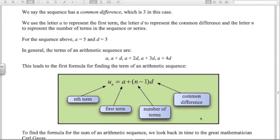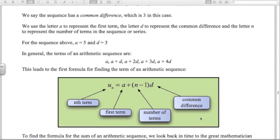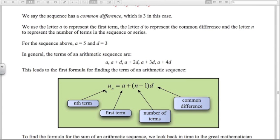Now this formula is on the formula sheet. U_N instead of T_N is the nth term: A the first term, N the number of terms, and D the common difference. So there's your first formula for working out the term.